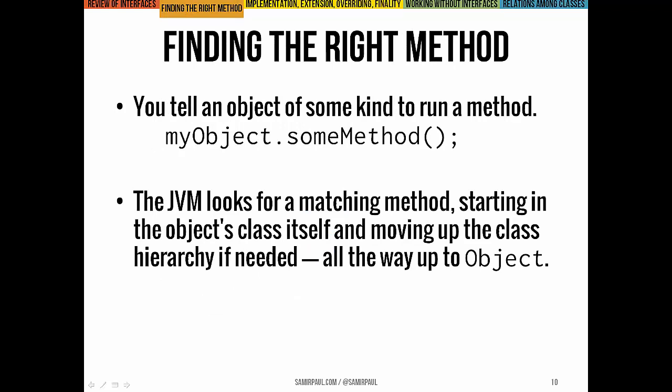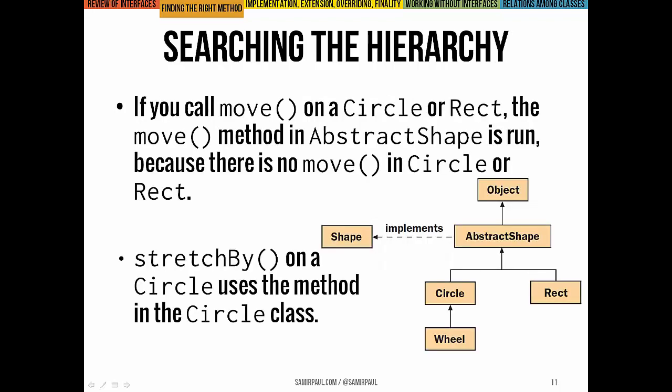Whenever you call a method, whenever you send a message to an object, Java is going to look for the matching method starting in that particular object's class, and if necessary, move up the class hierarchy as far as it needs to go. For example, move was defined in the abstract Shape class, and both Circle and Rect inherit that method — they don't override move, so when we call move on a Circle or Rect, the abstract Shape's move method is the one that's activated.